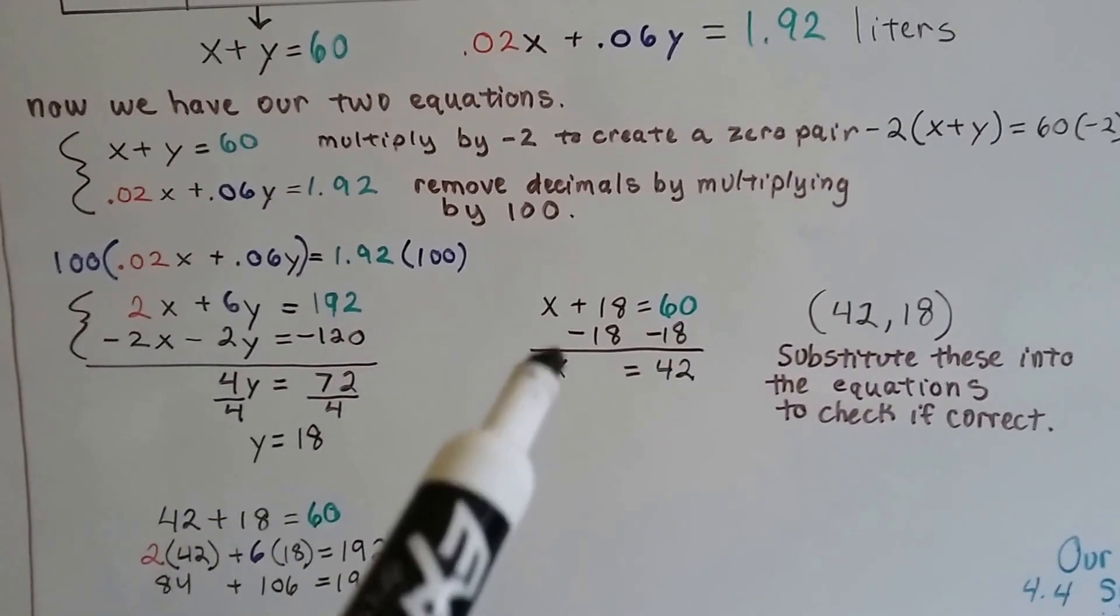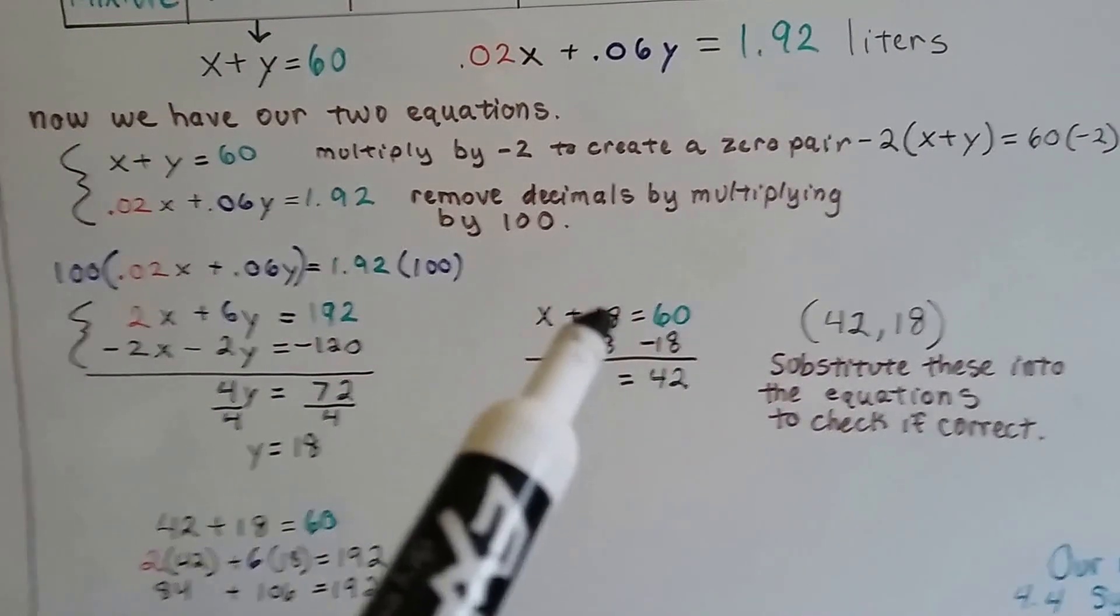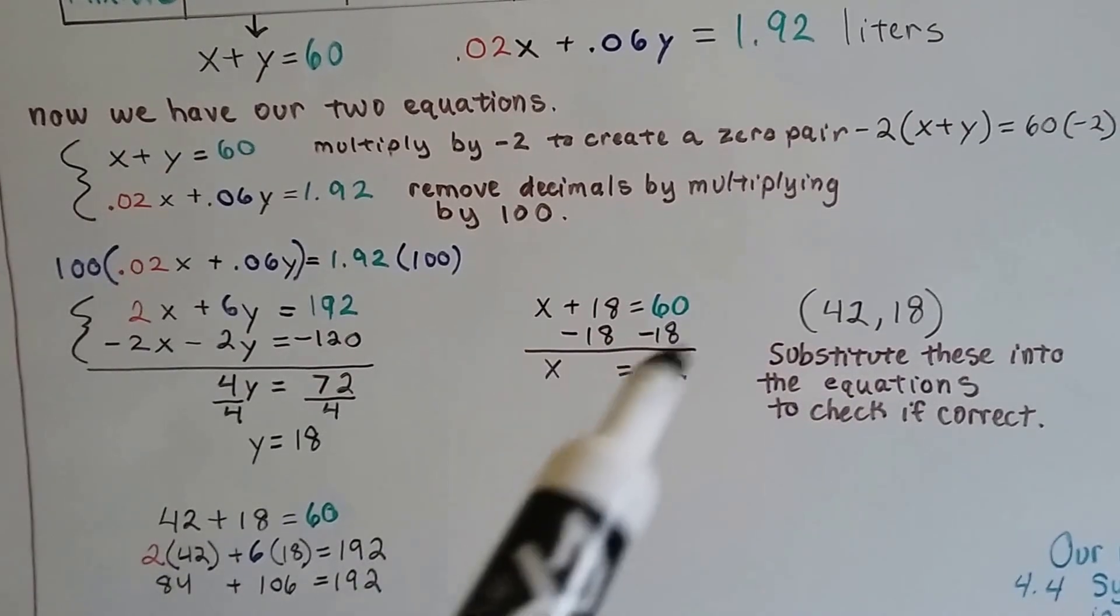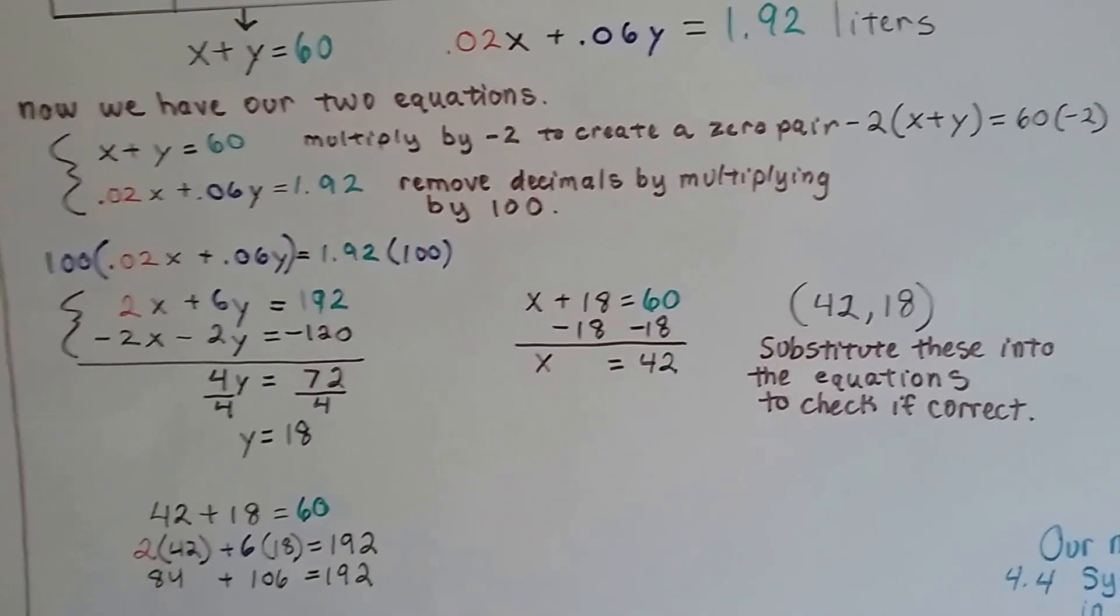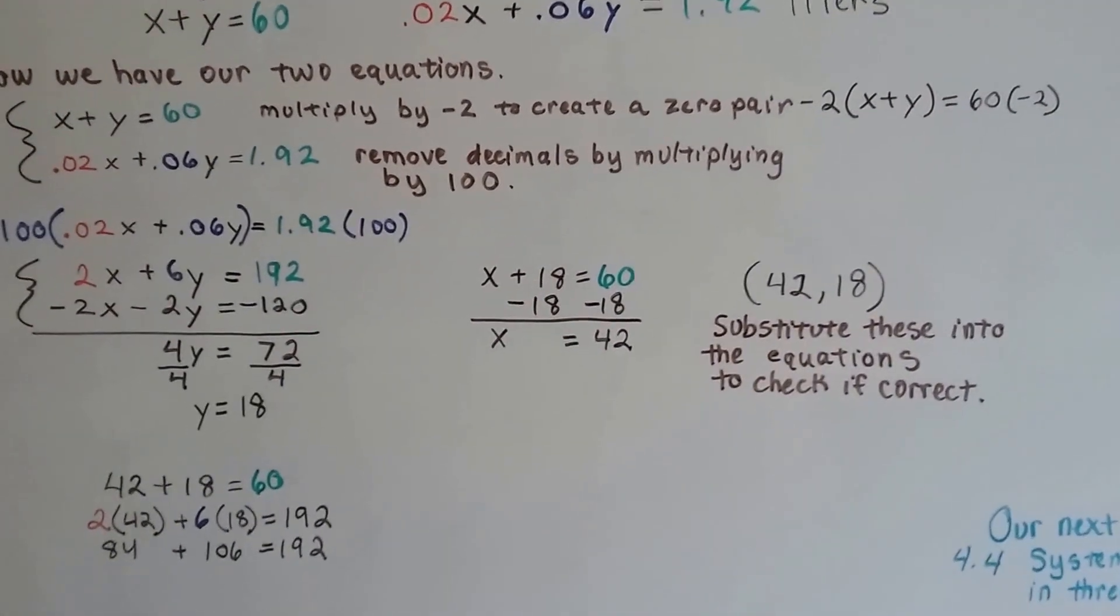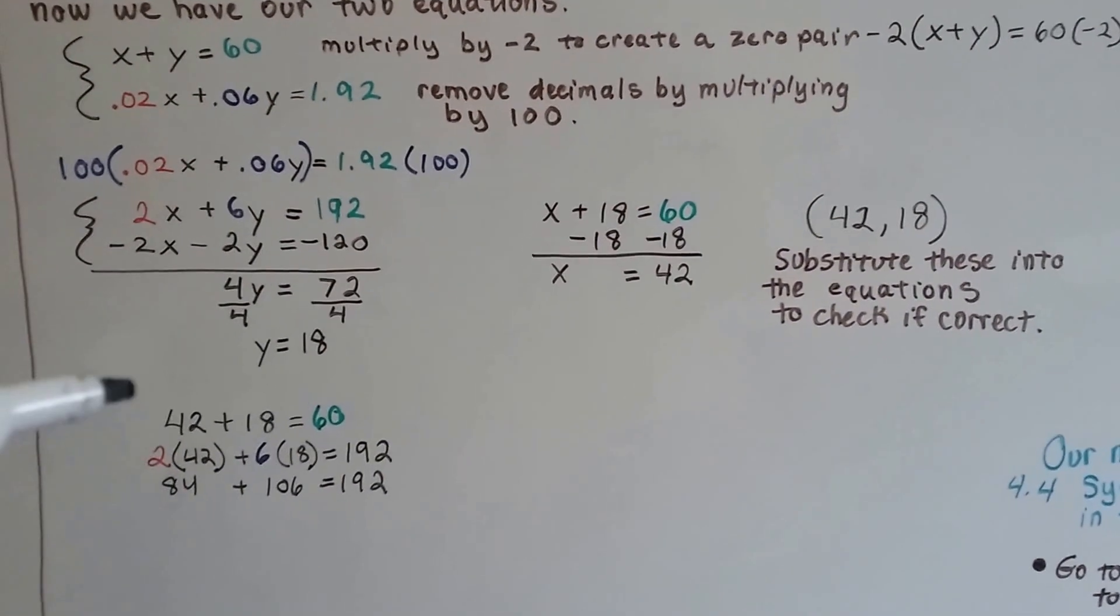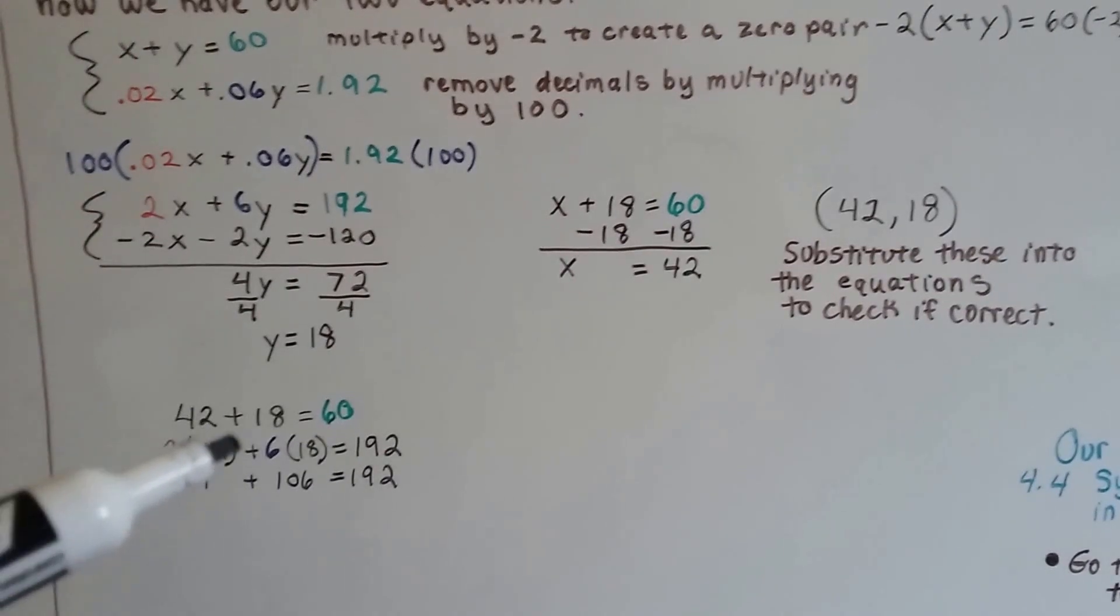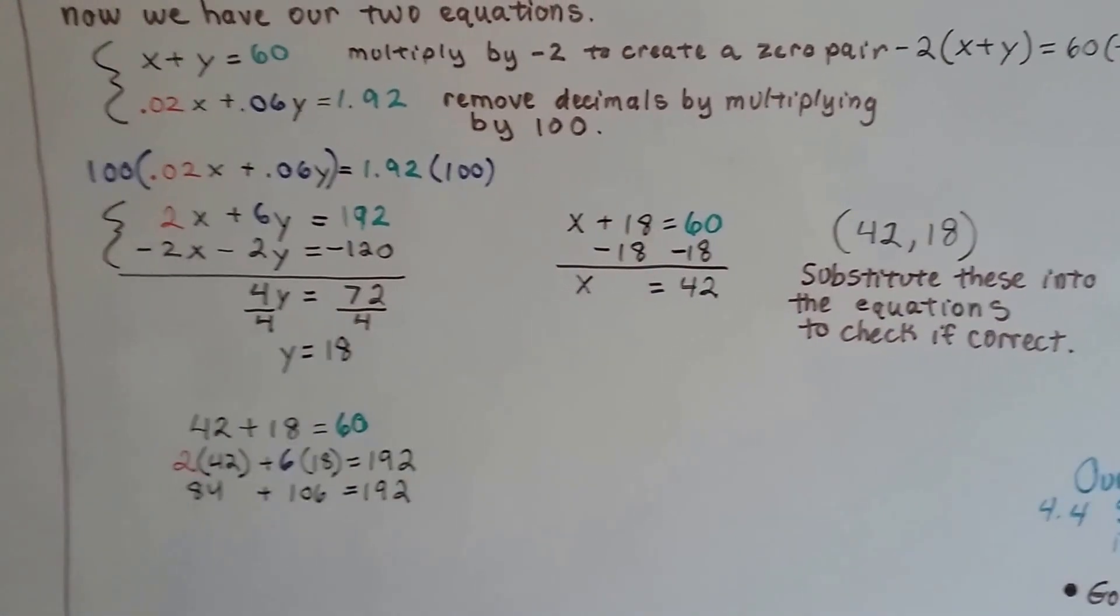We plug this Y equals 18 into our other equation. And, X plus 18 for Y is 60. We can take away 18 from each side of the equation, create a zero pair here and we get X equals 42. So, now we know our answer is X is 42, Y is 18. We can substitute these into the equation to check if it's correct. 42 plus 18 does equal 60. And, 2 times 42 plus 6 times 18 does equal 192. So, we know we did it correctly.